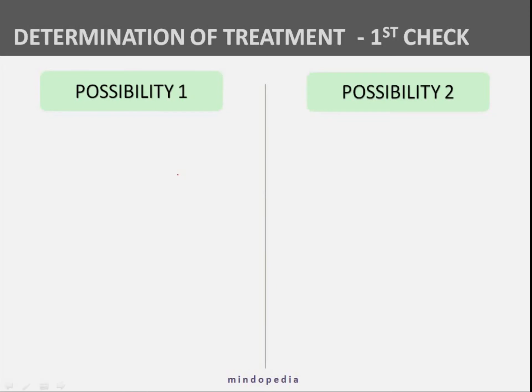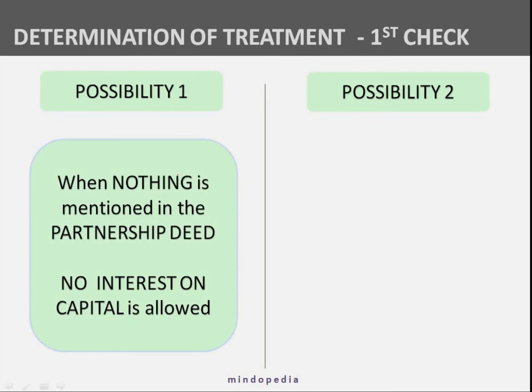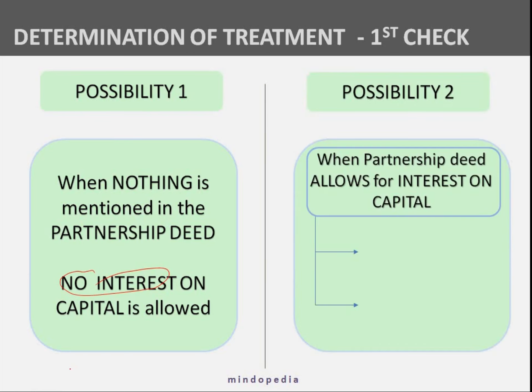Possibility one is extremely simple. It says when nothing is given in the partnership deed, allow no interest on capital. It is as simple as that — if there is no provision in the partnership deed, then no interest on capital will be provided.